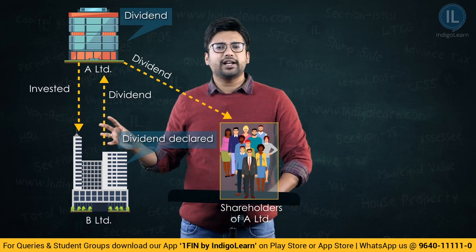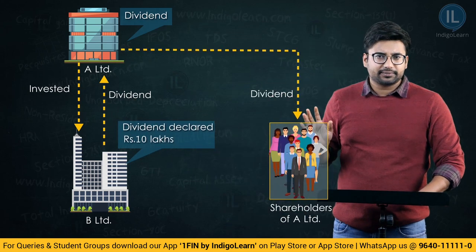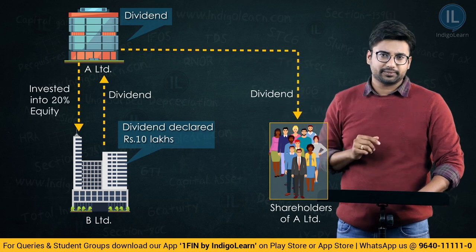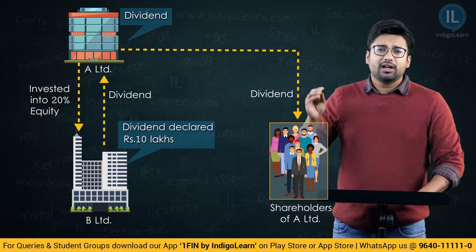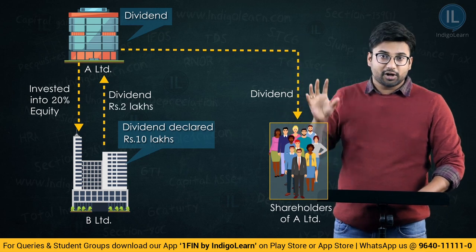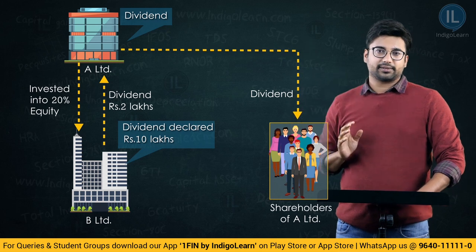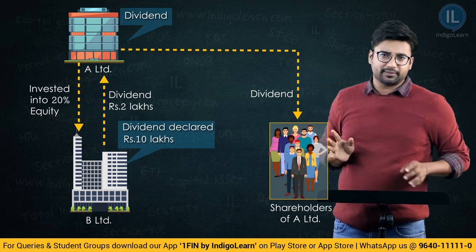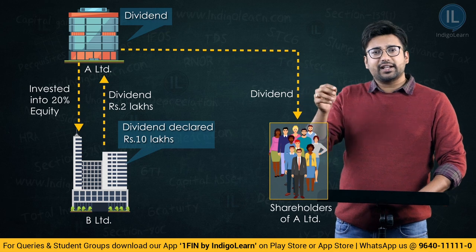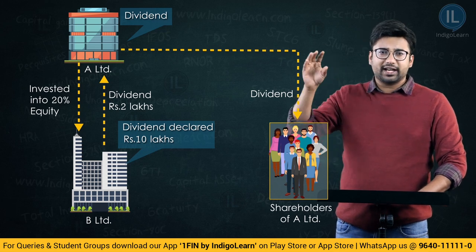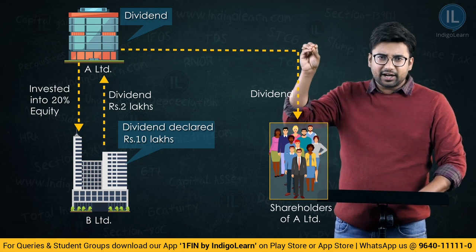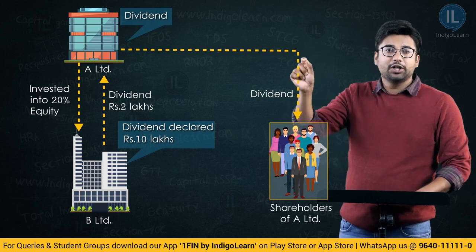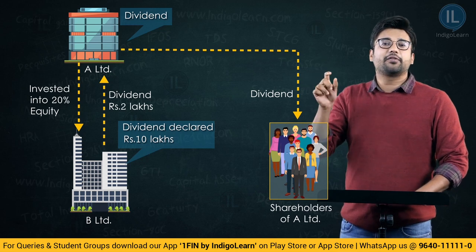Let us say B Limited distributed 10 lakhs as dividend. Now in B Limited, A Limited holds 20%. So out of that 10 lakhs, A Limited would have received 20% of the entire dividend — that is 2 lakhs. What amount of these 2 lakhs will be included in the total income of A Limited? Obviously the entire 2 lakhs will be included. Let us say the entire 2 lakhs is included into the total income, and now the gross total income of A Limited includes 2 lakhs which has been received from B Limited.